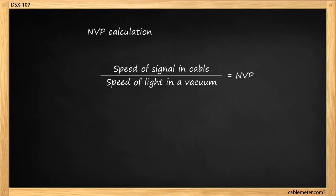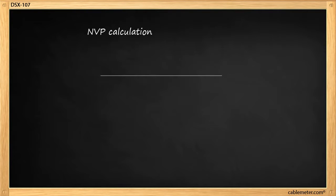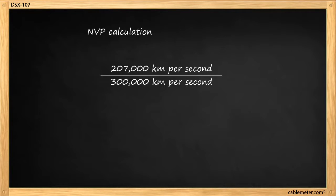MVP is calculated by taking the speed of the signal in your cable and dividing it by the speed of light in a vacuum. A typical value for a signal in a cable may be 207,000 kilometers per second. The speed of light in a vacuum is 300,000 kilometers per second. That gives us an MVP of 0.69 or 69% in this example.